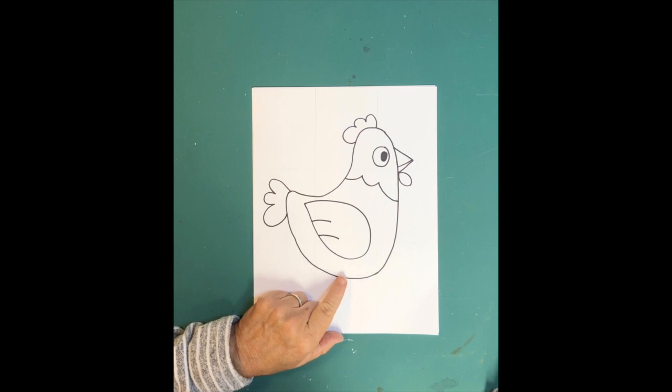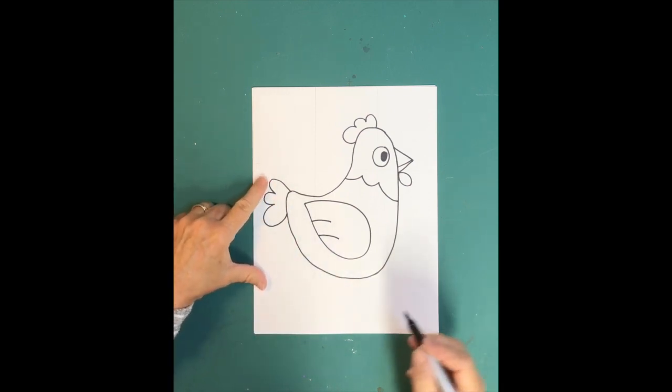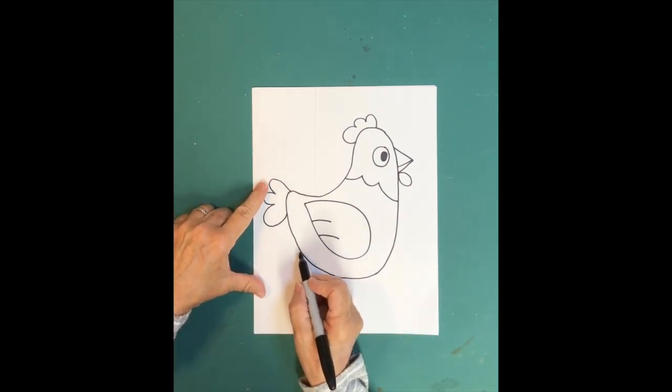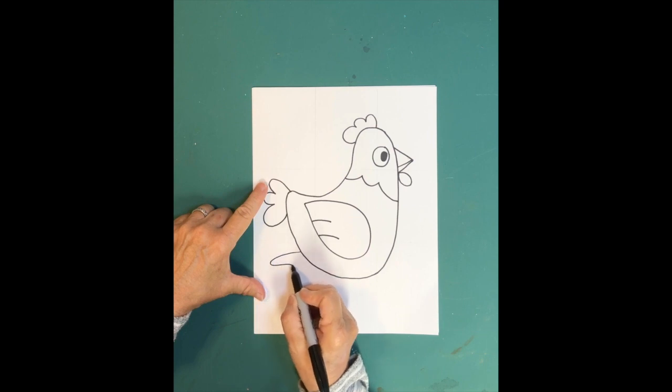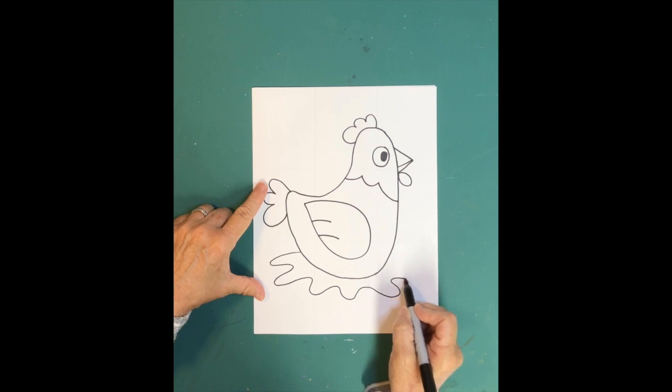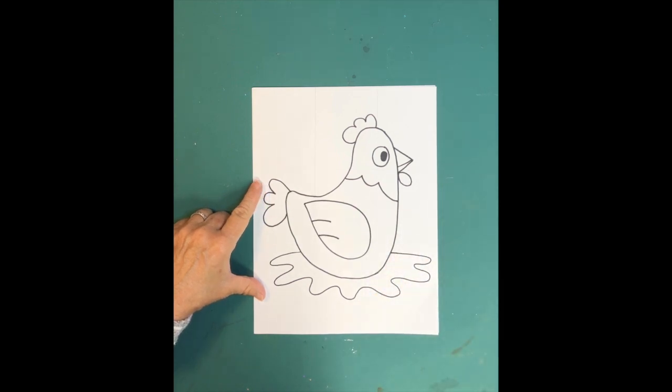This chicken is going to be sitting on a nest, and she's probably got some eggs in there. You can just draw some curvy lines that will represent her nest.